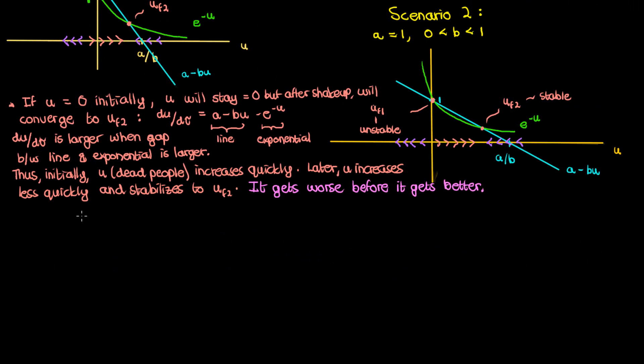Ideally though you want it to stabilize before everyone gets infected. Now let's consider a final third scenario where a is still one but b is now greater than one. In this case my positive fixed point is no longer there and I have a zero fixed point and a negative fixed point instead.